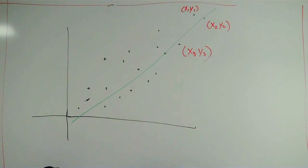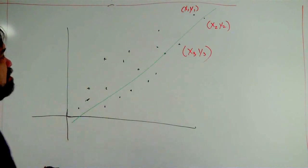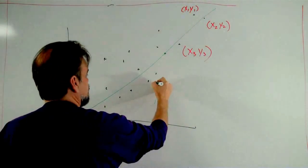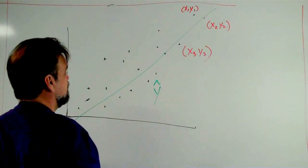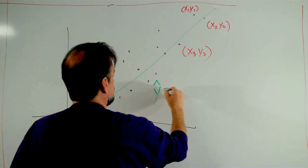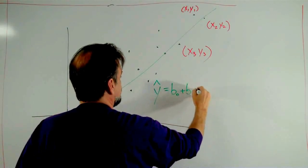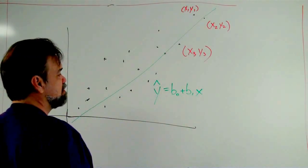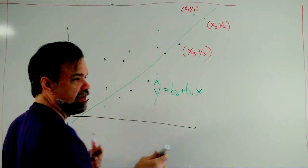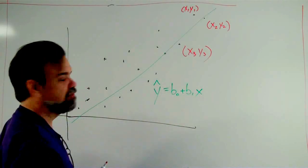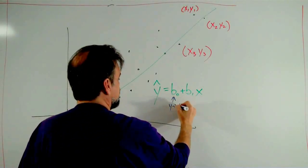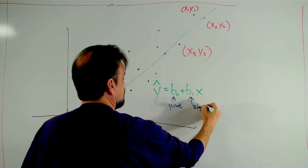This line is going to be our estimate of what these data points are. And I'm going to call this y hat, y hat. So, I'm going to say y hat equals b0 plus b1x. And in algebra 2 and algebra 1, we used to write y equals mx plus b. Well, we're just changing the names of the parameters here, but it's no big deal. So, this is still the y-intercept, and this is still the slope.